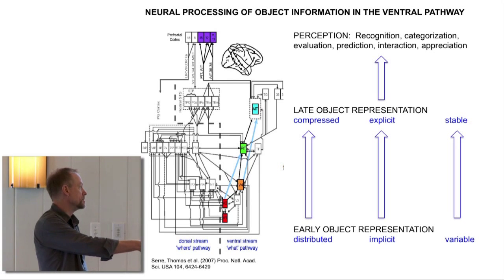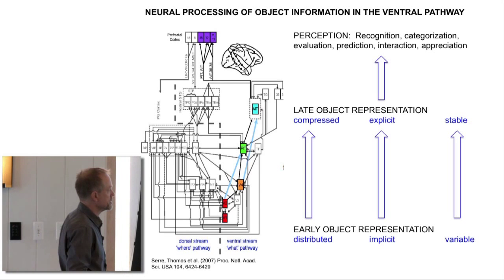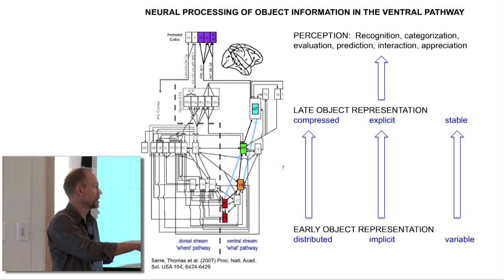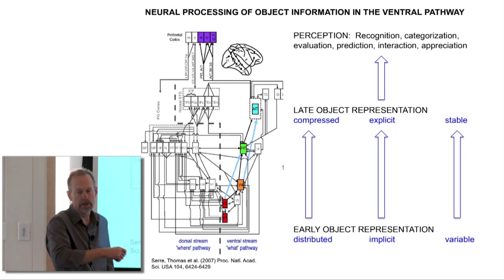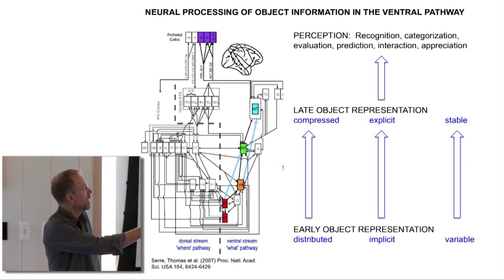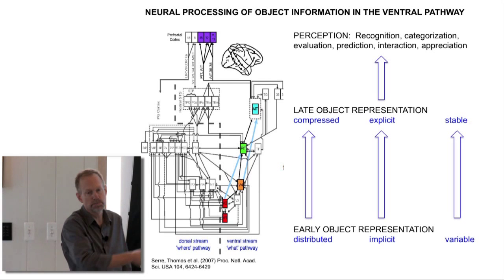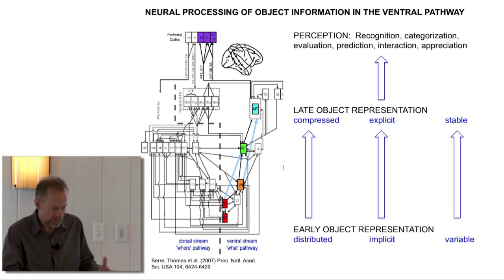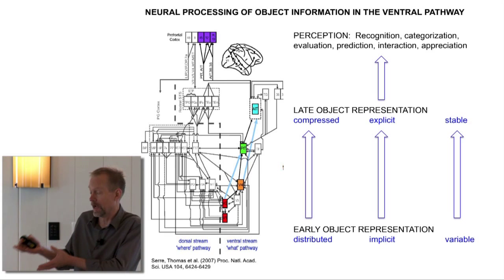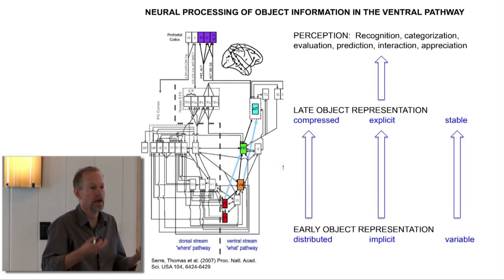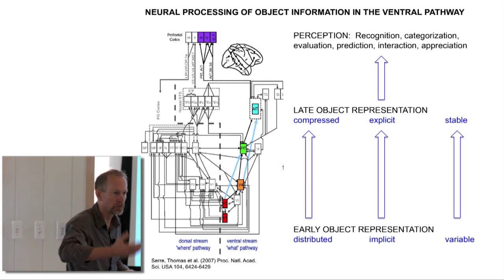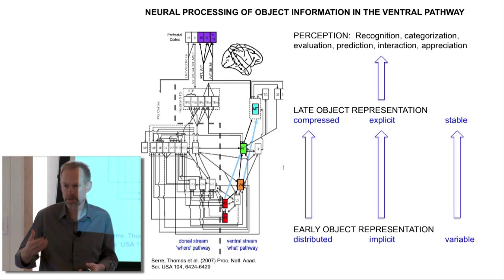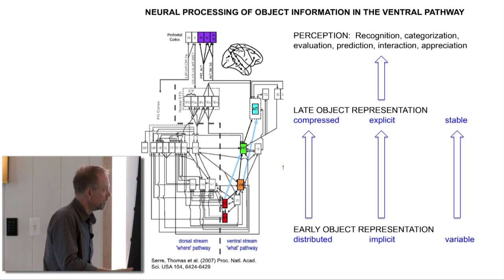What is originally very implicit representations of objects, object structure, object identity, everything we know about objects, has to become much more explicit. That is, it has to be a very readable code so that if prefrontal cortex wants to access information about objects, it can do it without having to go through a lot of decoding steps.